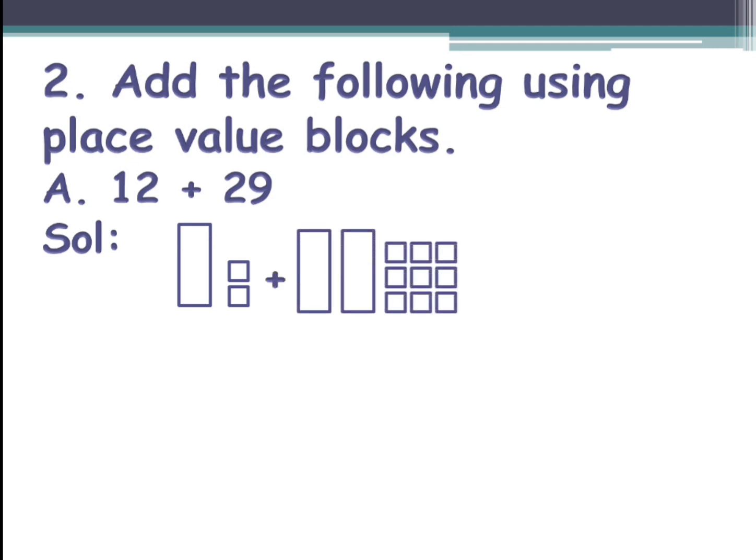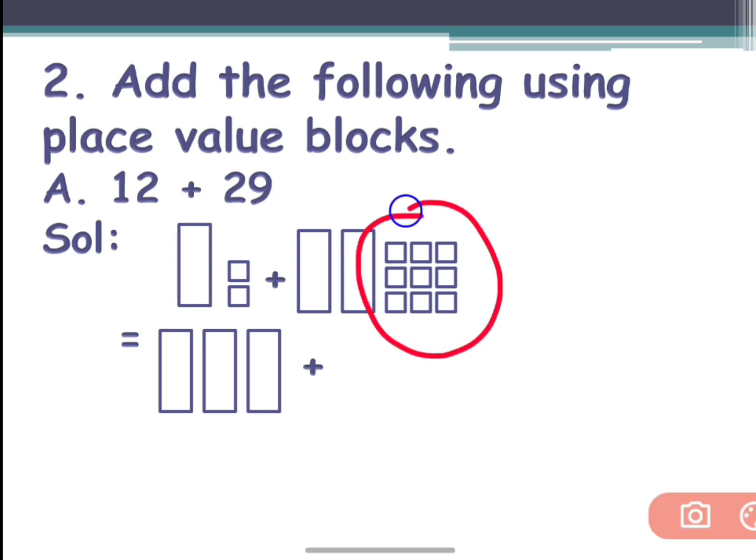Now we have to separate the tens and ones. Three rectangles we have, so you will draw three rectangles, then you will place plus and the number of ones. You have 9 here, there are 9 here - 9, 10, 11. So you will draw 11 small squares.